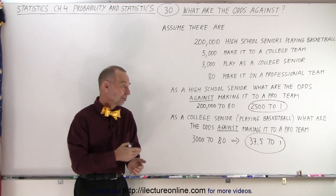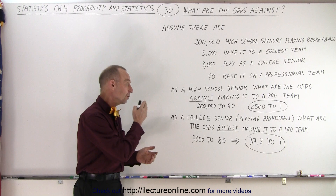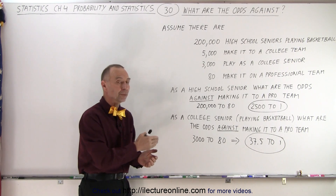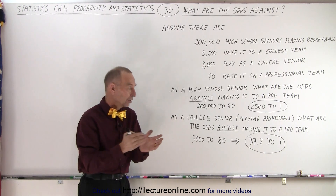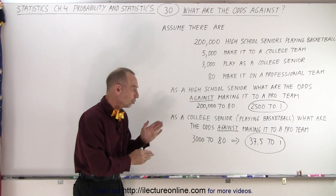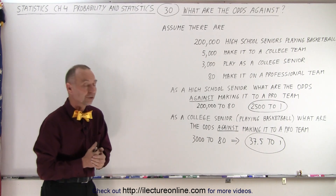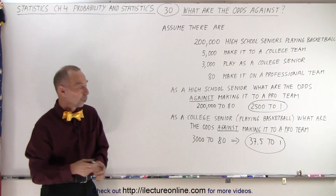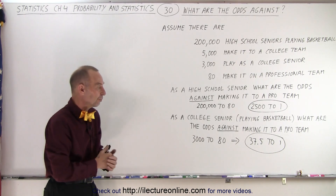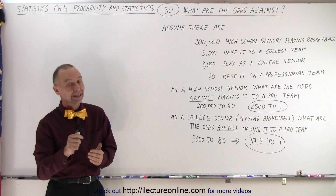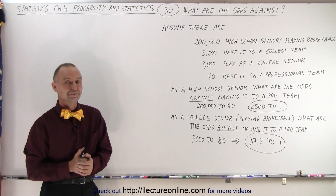What are the odds against? We take the ratio of one number to another and reduce it to something to 1. In this case it would be 2,500 to 1 or 37.5 to 1 — and that is how it's done.